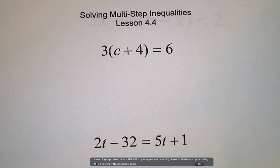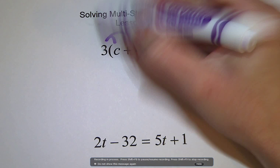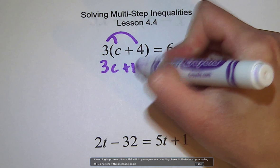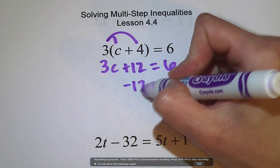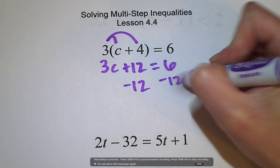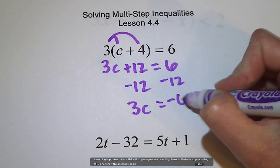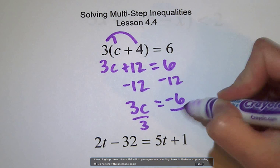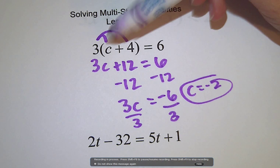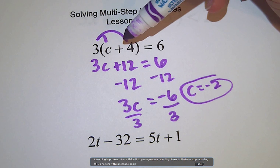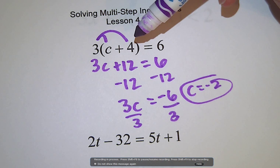On this first one, we would distribute and we would have 3c plus 12 equals 6. Then we'd subtract 12, we would get 3c equals negative 6, divide by 3, and we would say c equals negative 2. We could check that by putting negative 2 in: negative 2 plus 4 is 2, 2 times 3 is 6, 6 equals 6, so we know we're right.